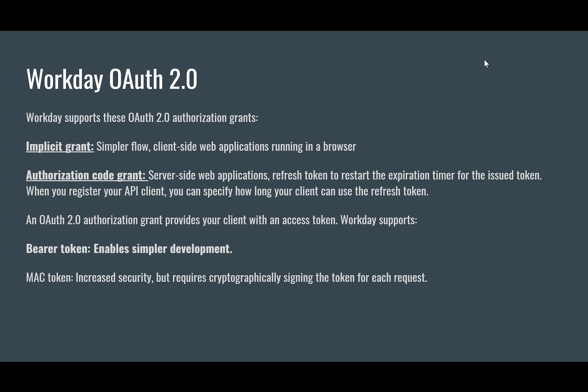With authorization code grant, we use a refresh token to restart the expiration timer for the issued token. When you register your API client, you can specify how long your client can use the refresh token for, and the OAuth 2.0 authorization grant provides your client with an access token. Workday supports two kinds of tokens: a bearer token, which enables simpler development, and a MAC token, which offers increased security but requires cryptographically signing the token for each request.